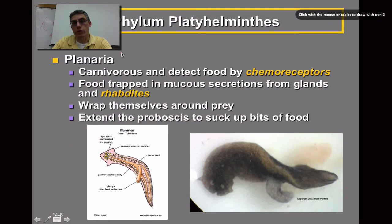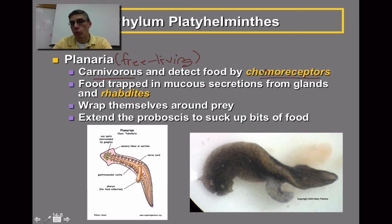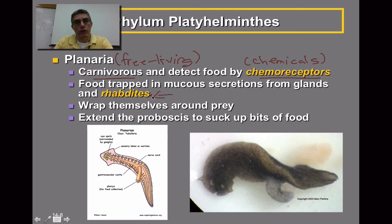When talking about feeding behavior of animals in phylum Platyhelminthes, planarians are free-living and have to go out into their environment to collect their own food. Planaria are carnivorous — they do not eat any type of plant matter. They detect their food using chemoreceptors, picking up specific chemicals in their environment that direct them to their food source. Food is trapped in mucous secretions from glands found in the rhabdites. They wrap themselves around their prey and extend their proboscis, or pharynx, to suck up bits of food.